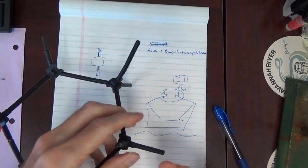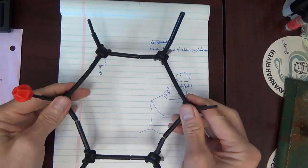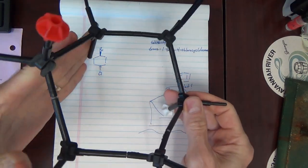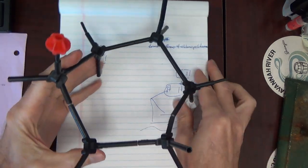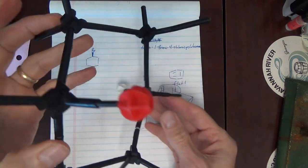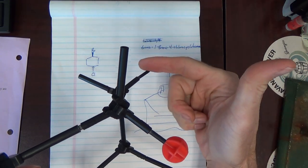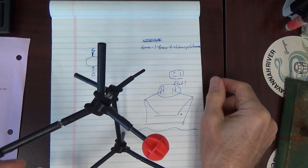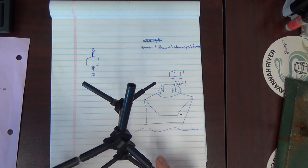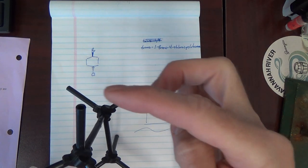To get to chair, we pull one end up but the other goes down. Now in the chair, look — the front bond is no longer eclipsing the back ones. Now we have staggered bonds. That's largely why the ring is not planar, but instead adopts a chair conformation — to allow the bonds to be staggered.